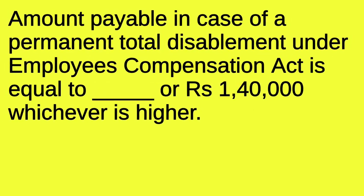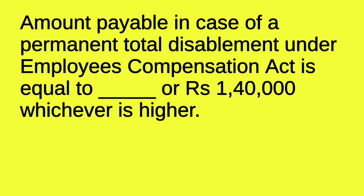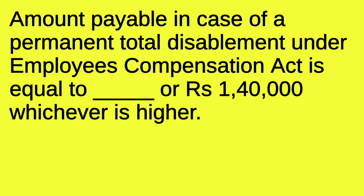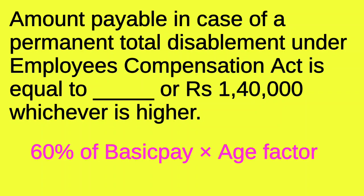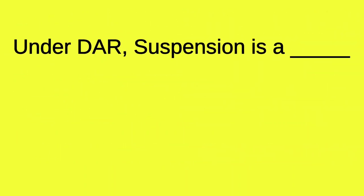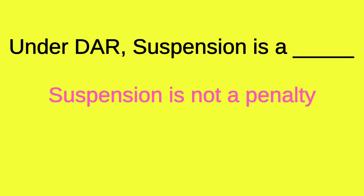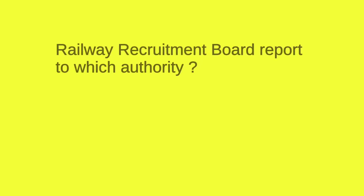Amount payable in case of Permanent Total Disablement under the Employees' Compensation Act is equal to 60% of basic pay multiplied by the age factor, or Rs. 1,40,000, whichever is higher. Under DAR, suspension is not a penalty — it is neither a major penalty nor a minor penalty.